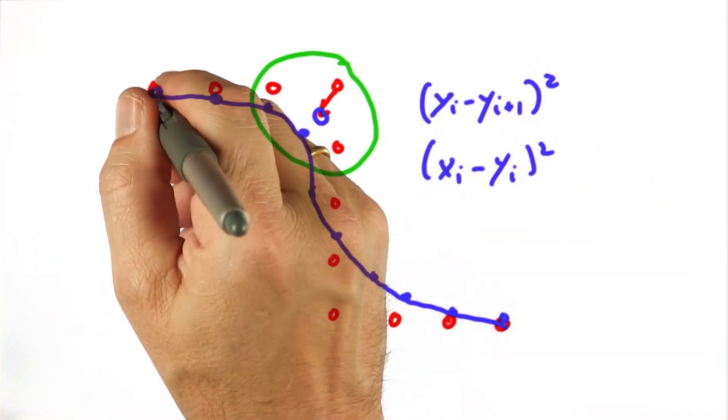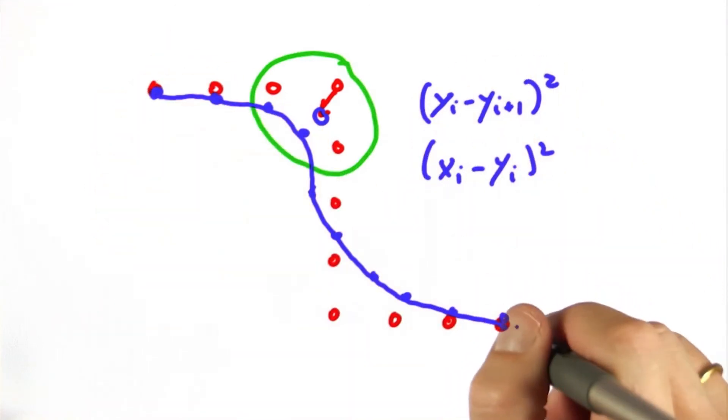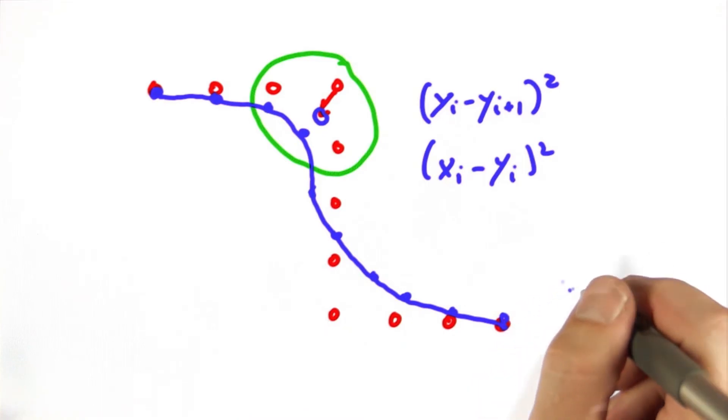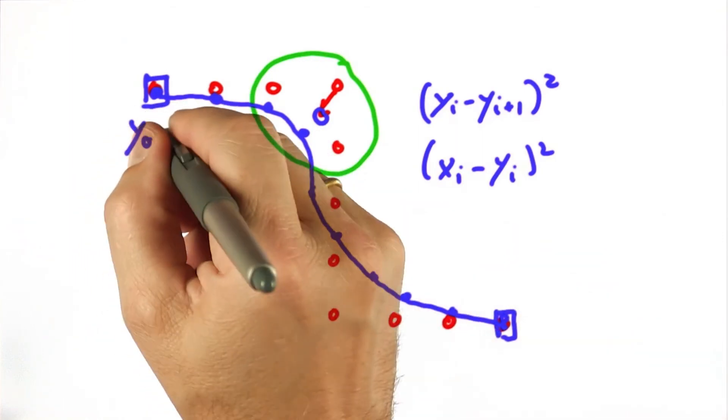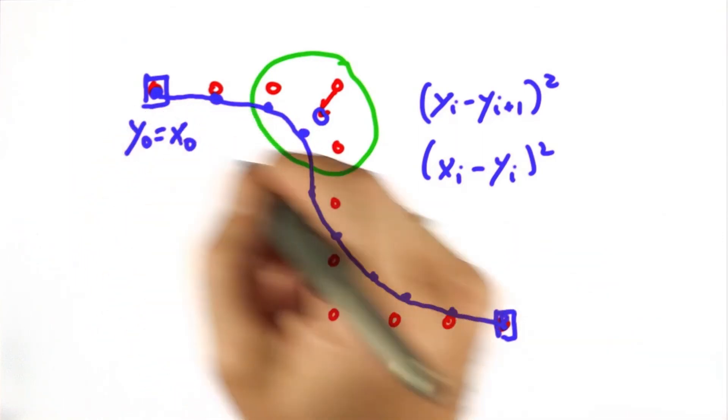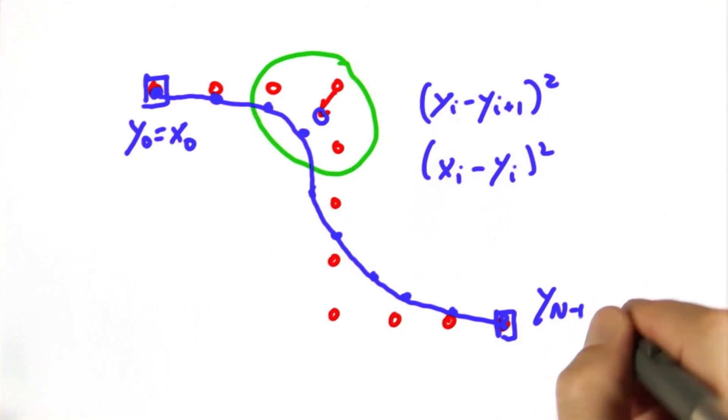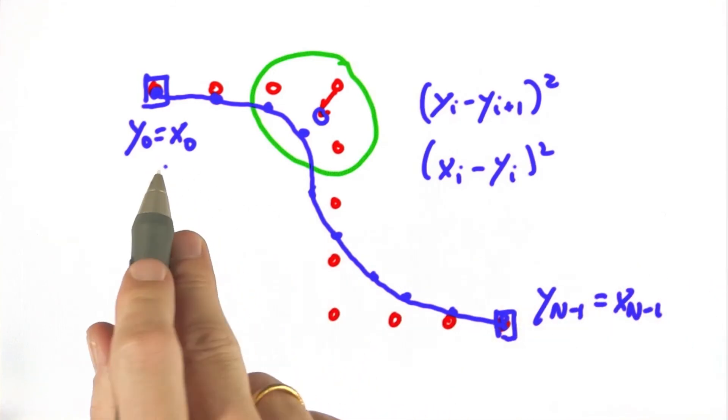If you insist that the original points are not changed, then just exclude those from the optimization. In fact, in our exercise, we will not consider those points. So y0 will always be the same as x0, and yn-1 will always be the same as xn-1, assuming we have n points starting at index 0. And the optimization is only applied to the intermediary points.